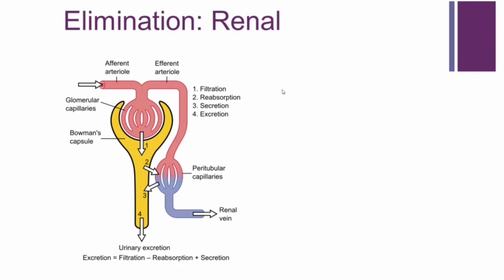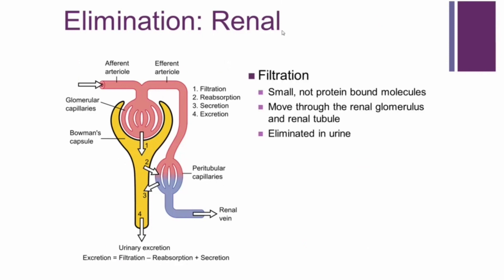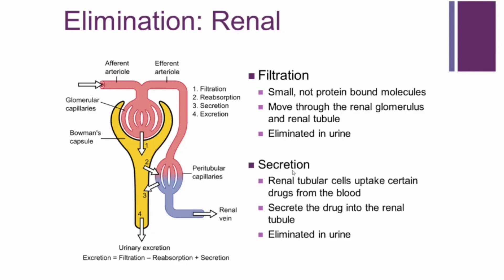A second type of elimination is renal elimination, which has two subtypes. There's filtration, which goes through the renal glomerulus and results in elimination through the urine. There is also secretion, where drugs are actively secreted through the renal tubules and then eliminated through the kidney and out in the urine. So the two types of renal elimination are filtration and secretion.